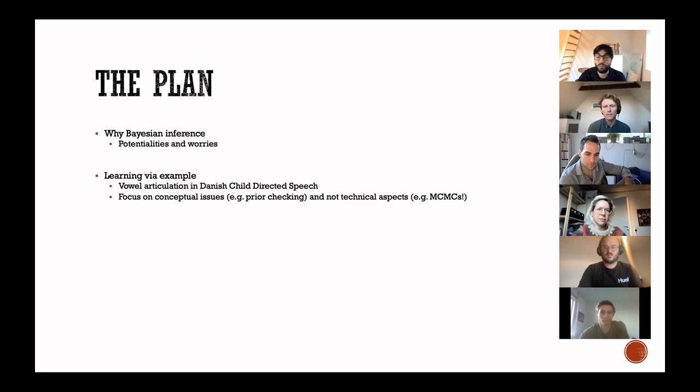We'll then pass to learning the way that we practice Bayes via an example from Chris's master thesis and from data that another PhD student, Christina Didrikson, recorded. That's vowel articulation in Danish child directed speech. The specifics don't matter, it's just a fun example. We will focus on the conceptual issues of setting up and running Bayesian analysis. We're not going to focus on the technical aspects that are below the Bayesian inference, like how the Markov chain Monte Carlo samplers work.